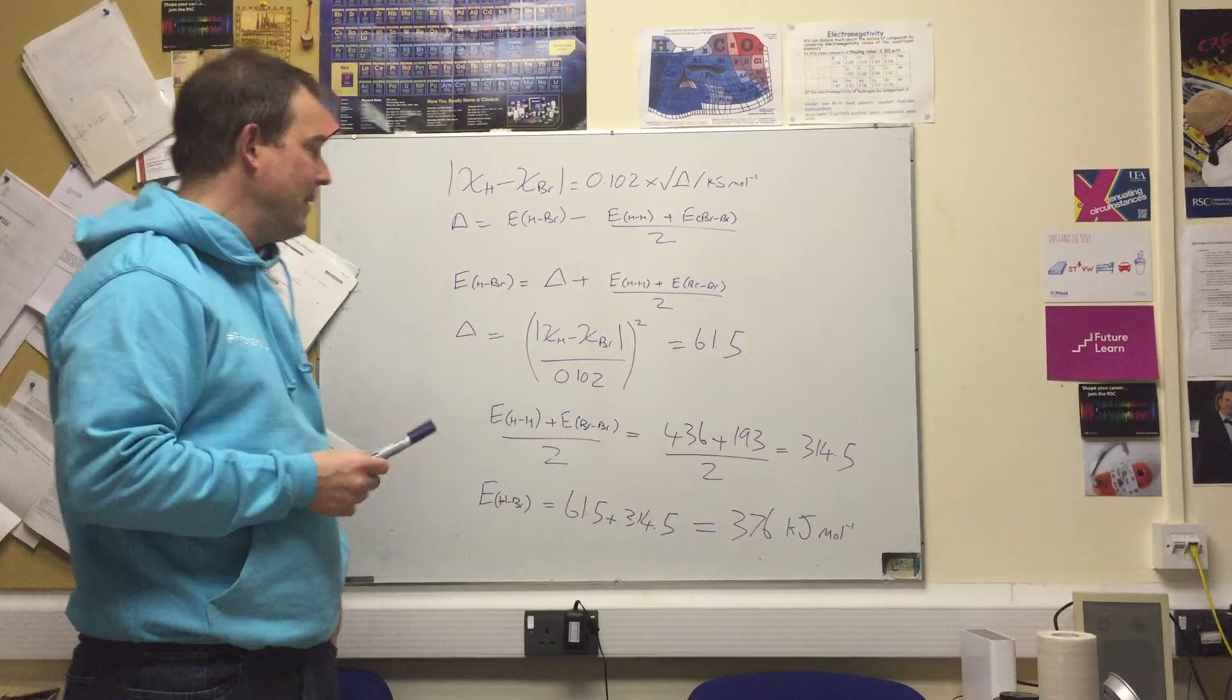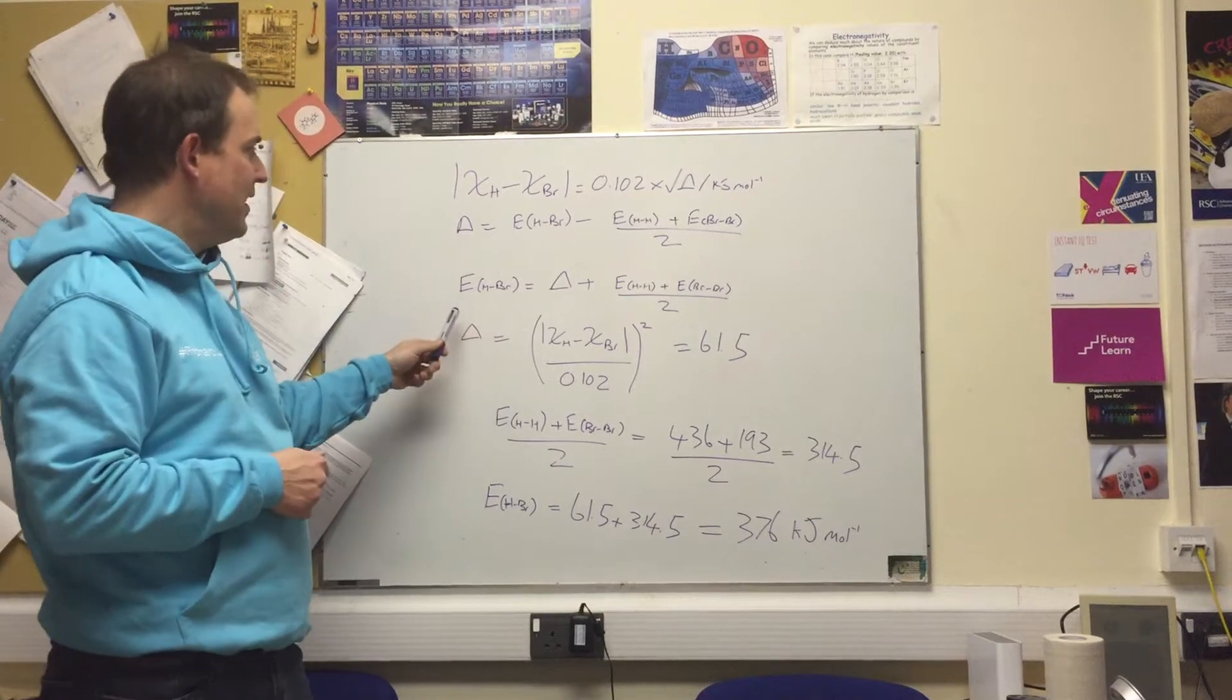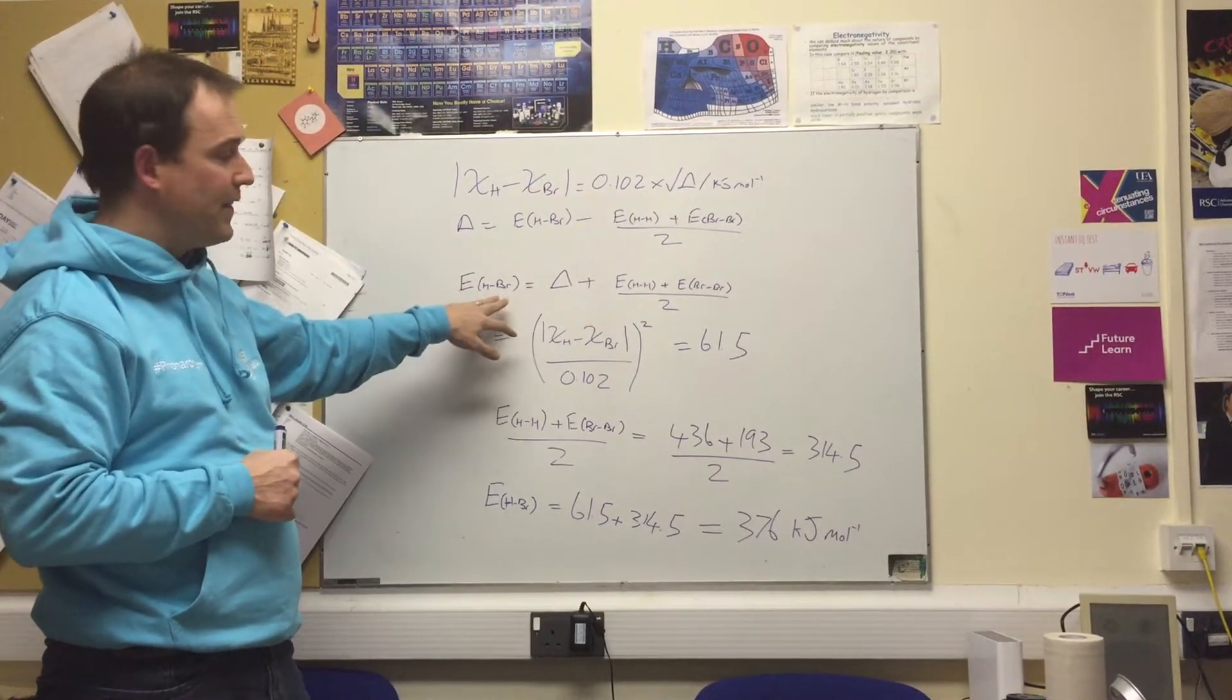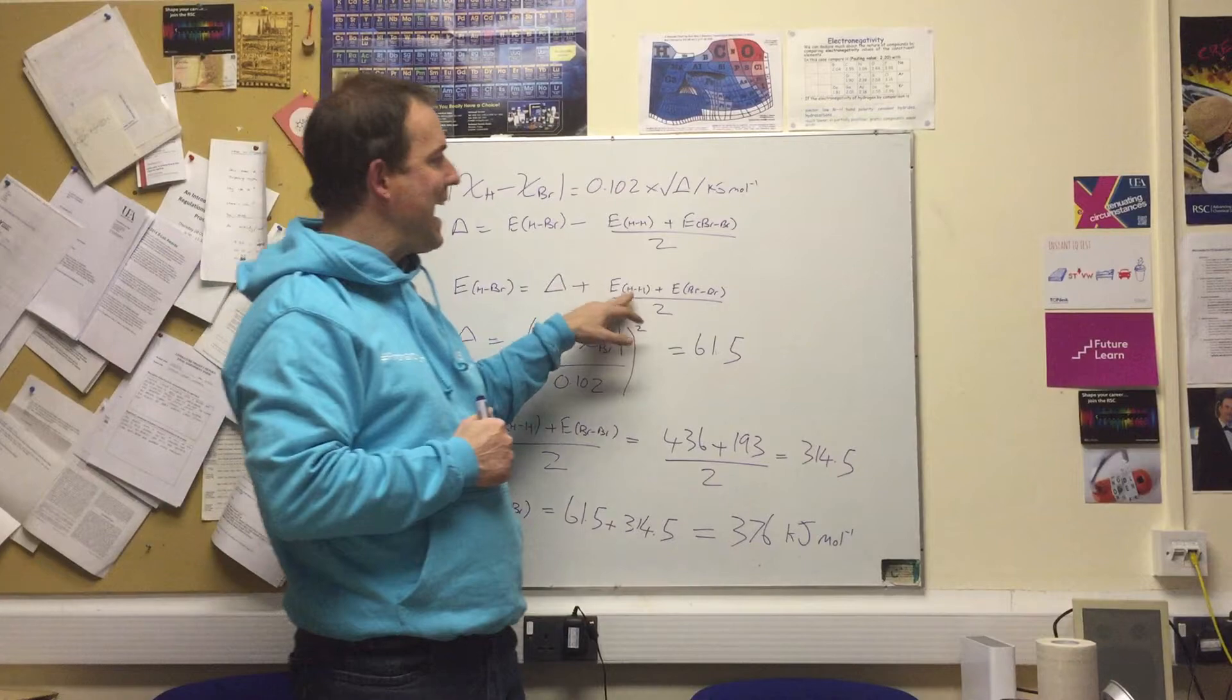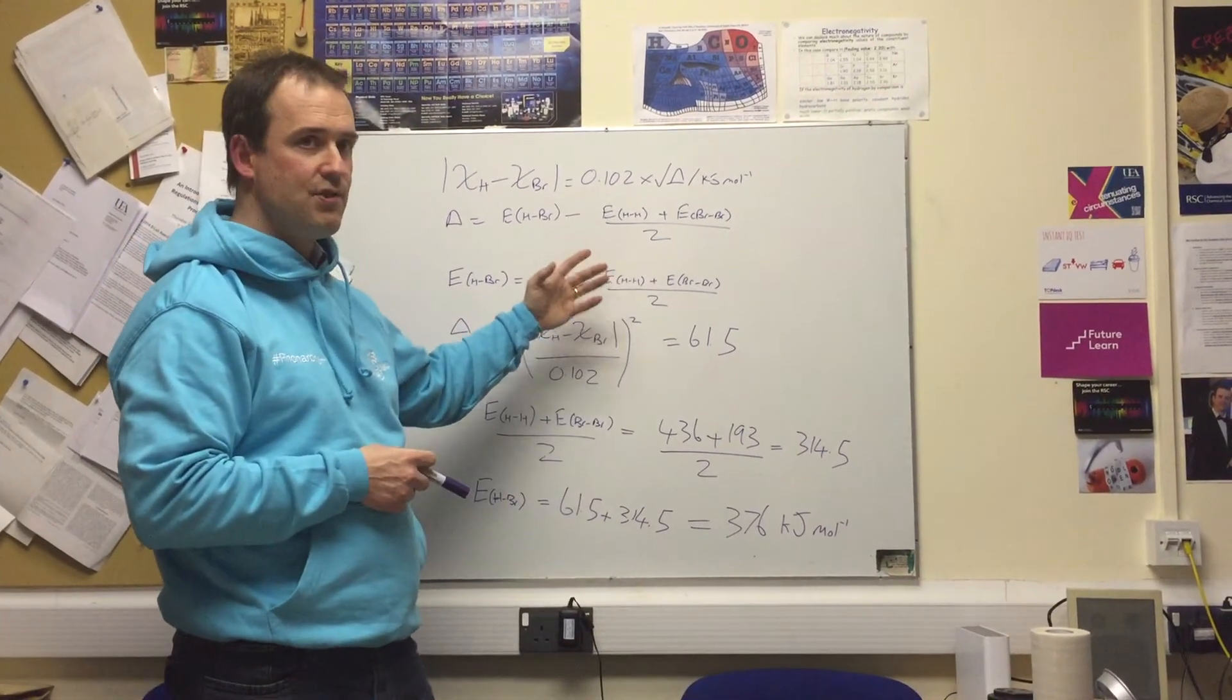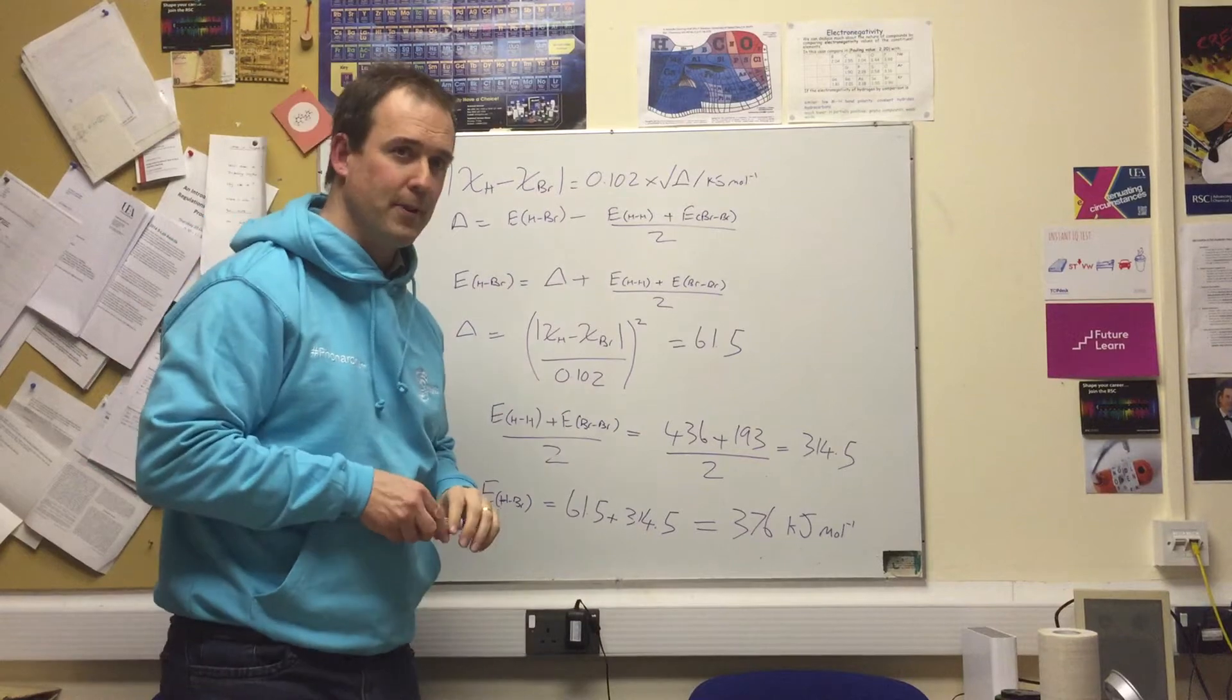The formula we're really interested in says that the energy for bond dissociation of the hydrogen bromide molecule is equal to delta, which is the ionic component, and the average of the covalent bond of hydrogen-hydrogen and the covalent bond of bromine-bromine. So this is the covalent component and this is the ionic component.